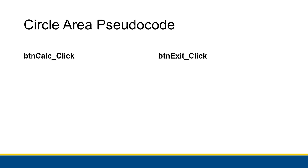We're going to look at the pseudocode for both procedures in the circle area program. button_exit_click is going to be super easy because for every single application with an exit button, it's going to be exactly the same. The really interesting one is button_calc_click, so let's get into what that looks like.